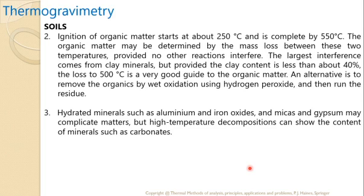The largest interference comes from clay minerals, but provided the clay content is less than about 40%, the loss at 500°C is a very good guide to the organic matter content. Around 500°C almost all organic matter is lost. An alternative is to remove organics by wet oxidation using hydrogen peroxide and then run the residue. A third approach involves hydrated minerals such as aluminum and iron oxides, micas, and gypsum, which may complicate matters, but high-temperature decomposition can show the content of minerals such as carbonates.